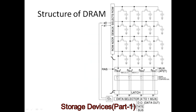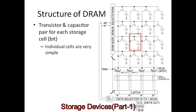DRAM follows a very similar operating principle, highlighted in this rather complex diagram here. If you look at the boxed area, we can see there is a transistor and a capacitor. A capacitor is an electrical device that is able to store a charge for a period of time. So the individual memory cell is very simple — it has two components: a transistor and a capacitor.